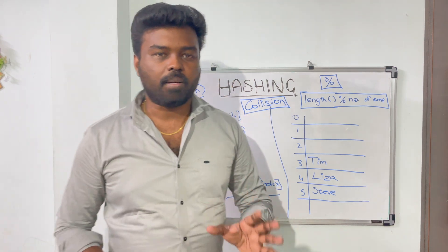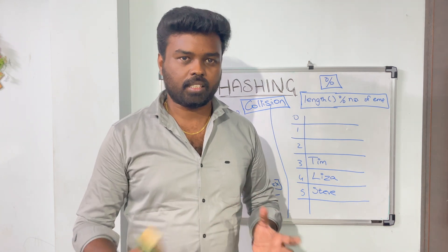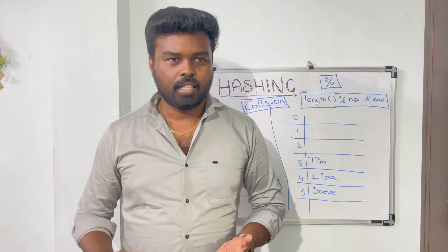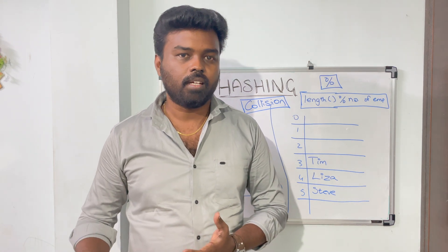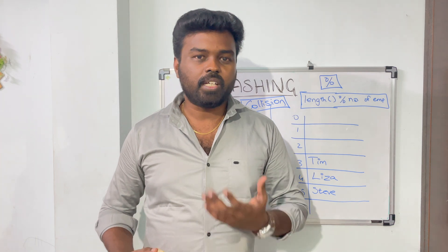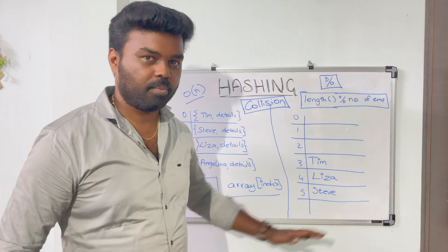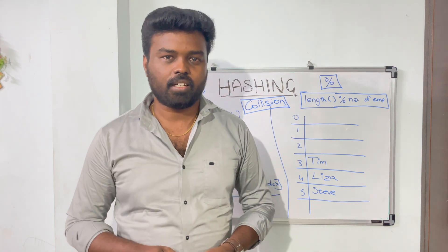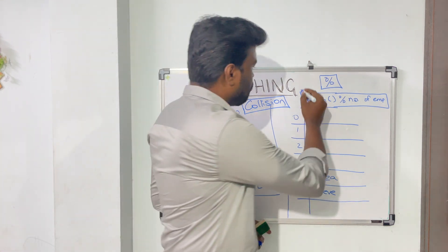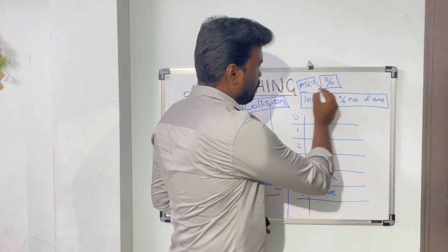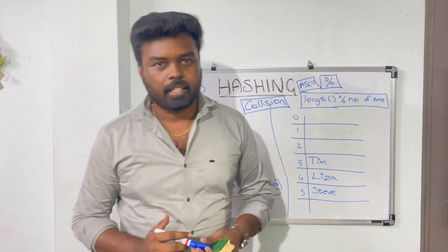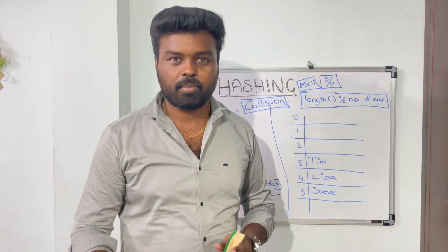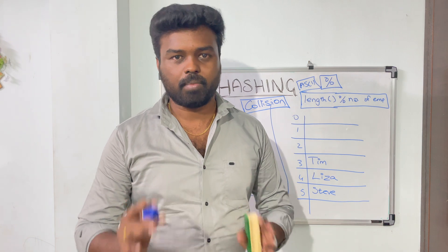C# has some built-in data structures and Java also has built-in data structures using hashing. For example, Java has HashTable and C# has Dictionary. These data structures are entirely implemented using this approach. They might not have used length as a hash function — they might have used some advanced algorithms, like finding the ASCII value of characters. But they definitely don't use length as a hash function. I am using length just for explanatory purposes — don't use that anywhere in real-time.